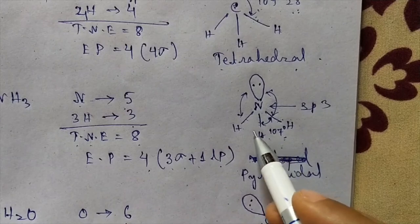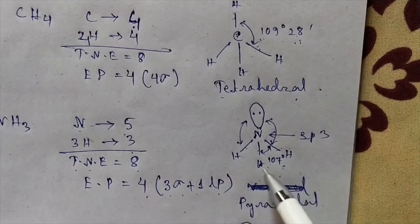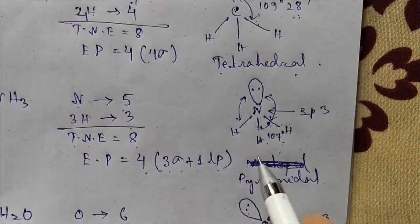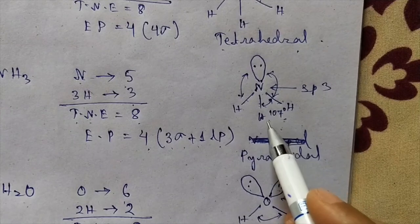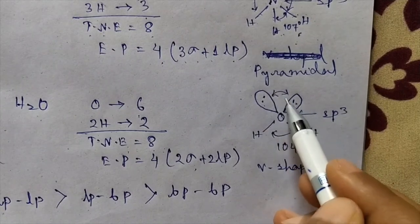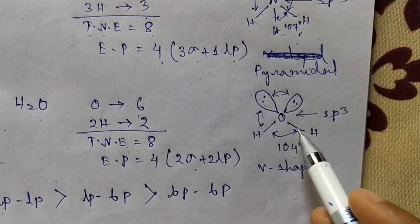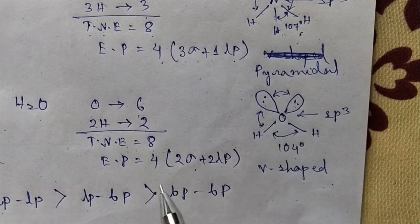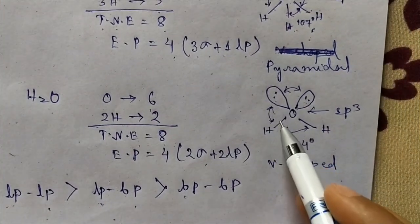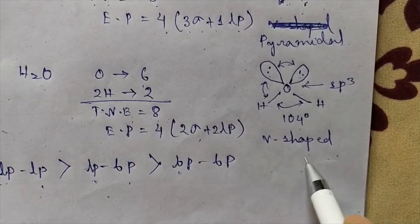In case of NH₃, the bond angle gets reduced from 109 degrees to 107 degrees — for ideal tetrahedral geometry the bond angle is 109 degrees. In case of H₂O, lone pair–lone pair repulsion is also present along with lone pair–bond pair and bond pair–bond pair repulsion. As lone pair–lone pair and lone pair–bond pair repulsions are higher than bond pair–bond pair repulsion, the bond angle further reduces from 109 degrees to 104 degrees and the shape is V-shaped.